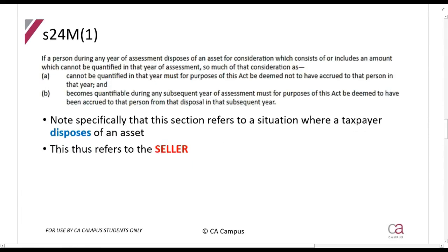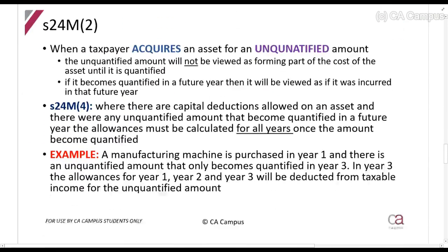Section 24M states: if a person, during any year of assessment, disposes of an asset for consideration which consists of or includes an amount which cannot be quantified, so much of that consideration as cannot be quantified must be deemed not to have accrued to that person in that year. If it becomes quantified in a subsequent year, it must be deemed to have accrued to that person in that subsequent year.